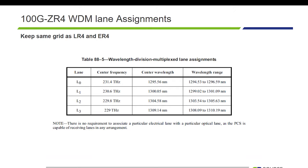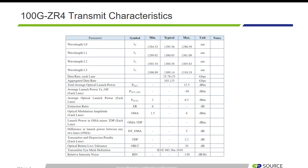For the transmit path, the four lanes are launched with LAN WDM wavelengths centered at 1296 nm, 1300 nm, 1305 nm, and 1310 nm and multiplexed onto a single mode fiber.